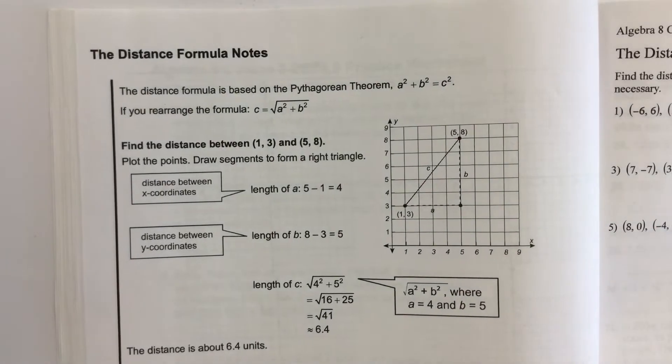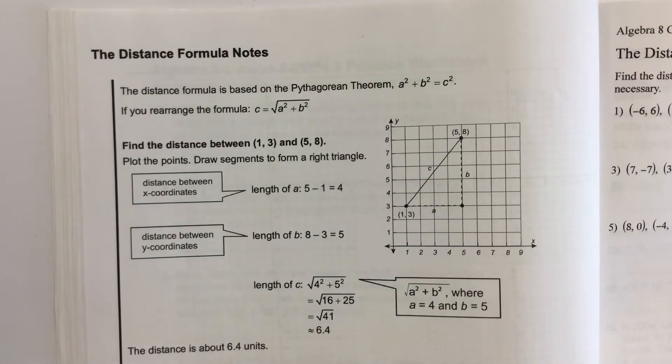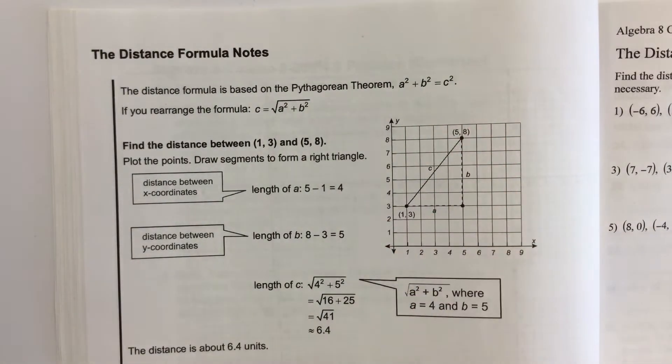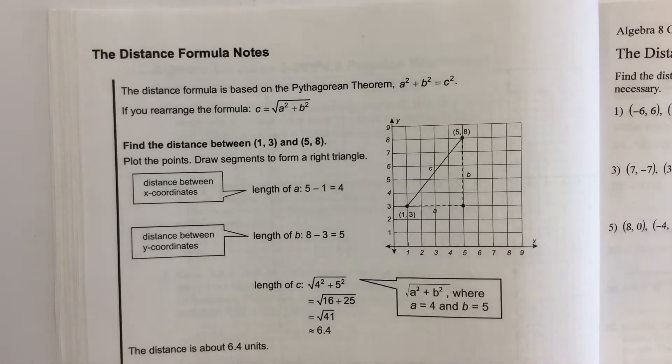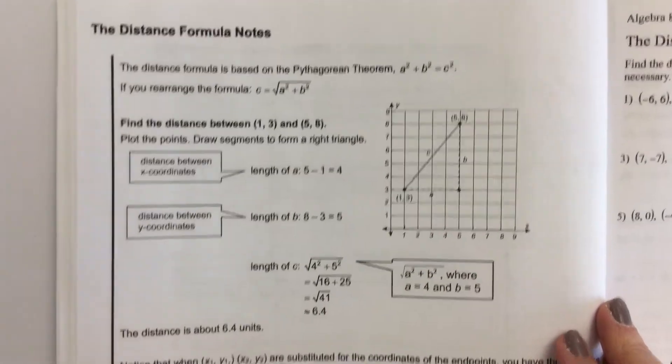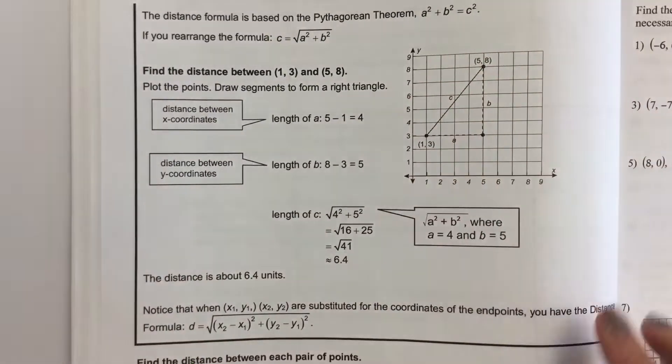Now what people have done is created a formula, so you don't have to draw a triangle every time you have two points that you need to find the distance between, especially when these points get further apart with larger numbers. We're not always going to have that coordinate grid to play with.